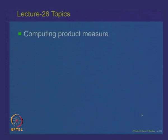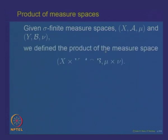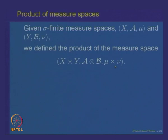In today's lecture, the main topic is computing the product measure. Let us recall that given sigma-finite measure spaces (X, A, mu) and (Y, B, nu), we defined the product measure space X cross Y with sigma algebra A times B, which is generated by all measurable rectangles E cross F where E belongs to A and F belongs to B. The product measure mu cross nu is defined on rectangles by mu cross nu of (E cross F) equals mu(E) times nu(F), and extended to A times B via outer measures.